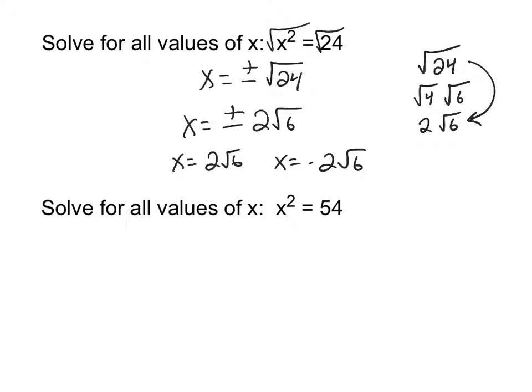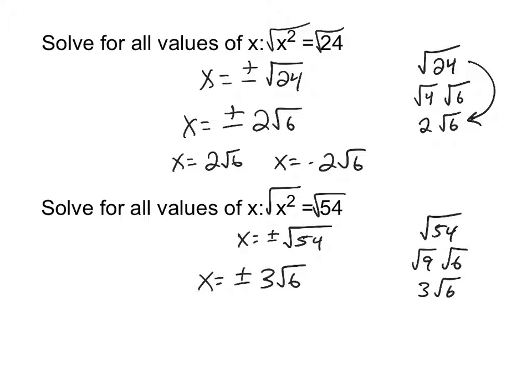So the answer that we'd want to say then is x equals plus or minus 2 radical 6. And that answer should be treated just the same as plus or minus 5. I mean, if you want to get crazy about it, you could write it this way if you want. You could write x equals 2 radical 6 and then x equals negative 2 radical 6. That's fine too. But that answer is perfectly acceptable. So knowing that, can you do the next one?